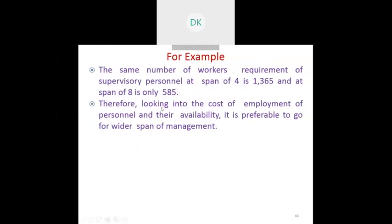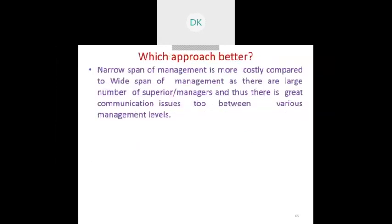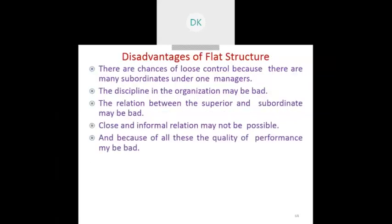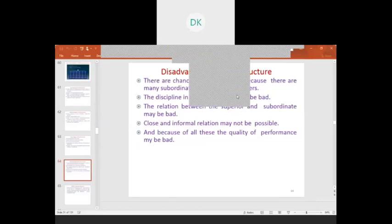Narrow span of management is more costly compared to wide span because more managers are required. For example, 1,365 employees can be controlled by four managers under a flat or wider span of control structure, whereas 585 people can be controlled by eight managers under a low span or tall structure. Therefore, considering the cost of employment, it is highly preferable to go for wide span of management.